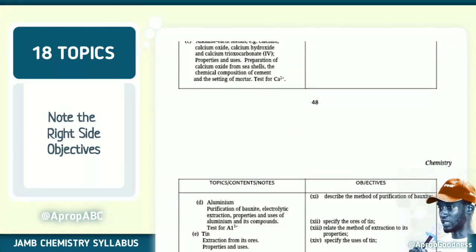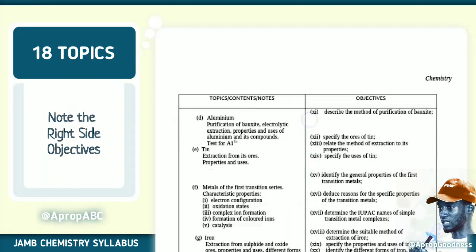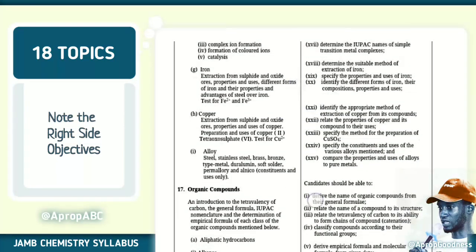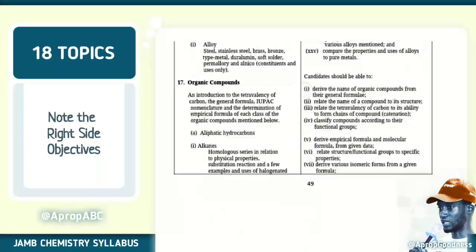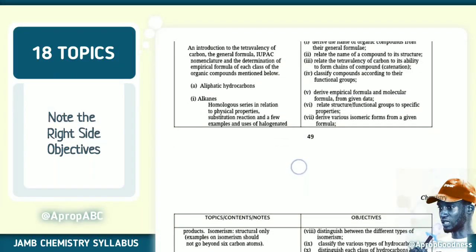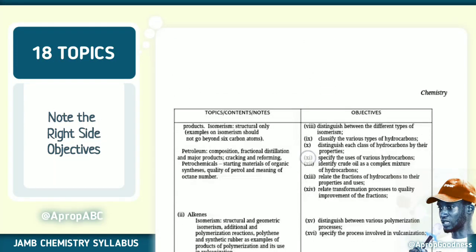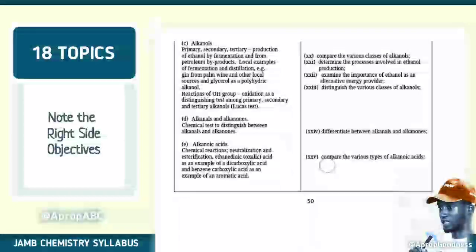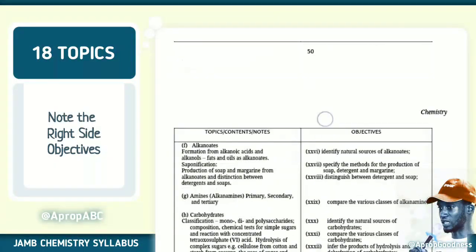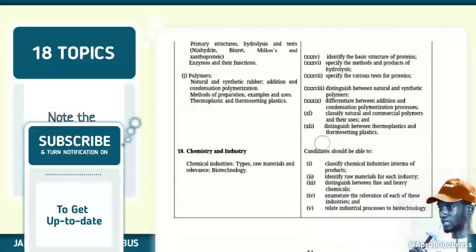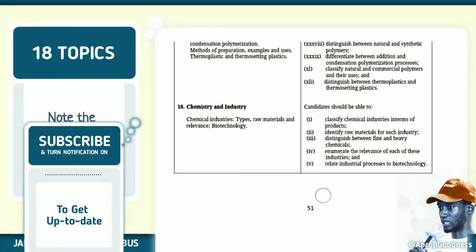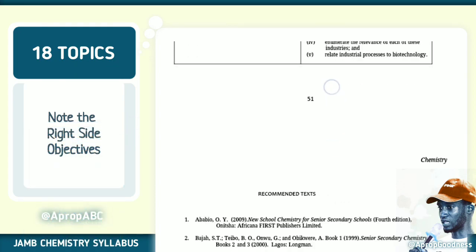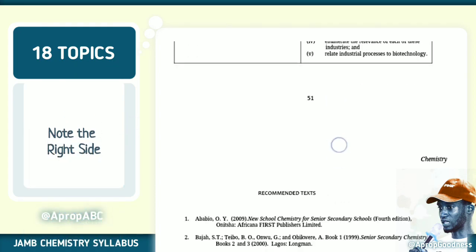Topic sixteen is metals and their compounds — aluminium, tin, iron, copper, and alloys. Topic seventeen is organic compounds — organic chemistry, note that very well. There will be videos rolling out for that, so don't forget to subscribe if you need more. Topic eighteen is chemistry and industry.